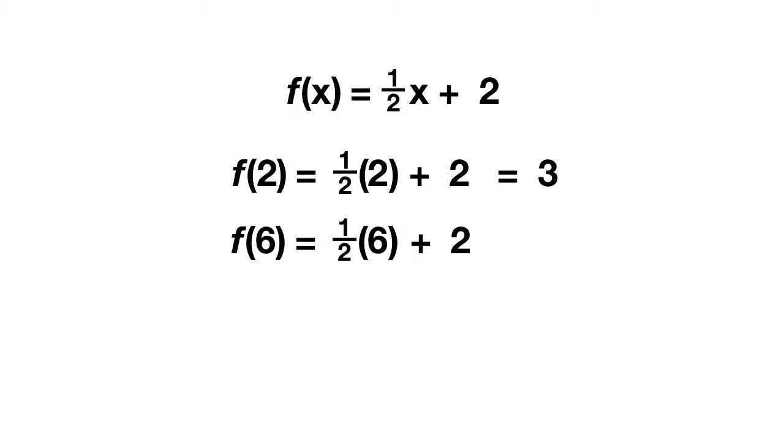Well, half of six is three, and three plus two equals five. Next let's solve for f of ten. How do I write the function now? Well this will be equal to one half, and we replace the x with a ten. Then we add two. What does this equal? Well, half of ten is five, and then plus two equals seven.